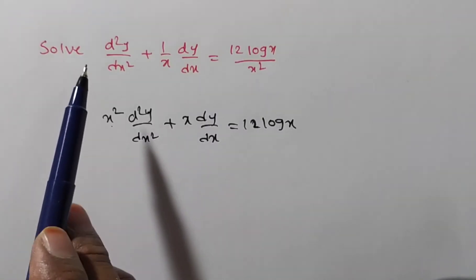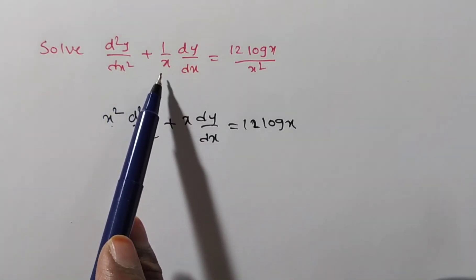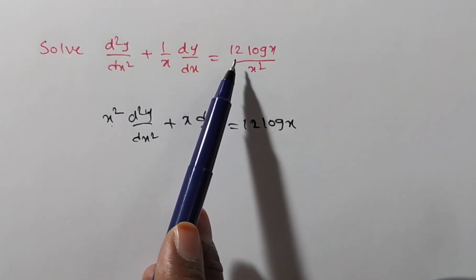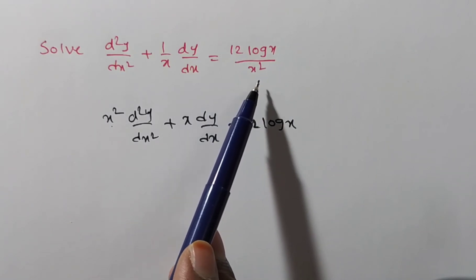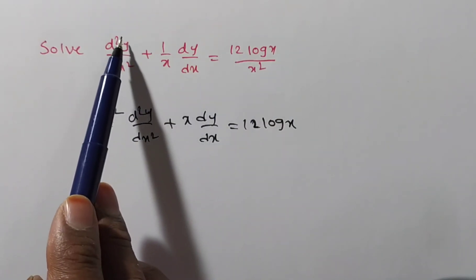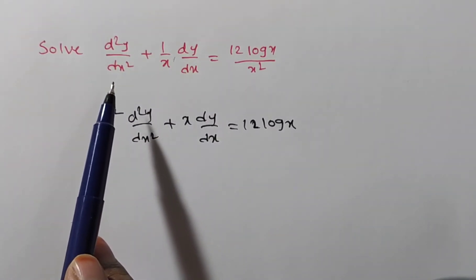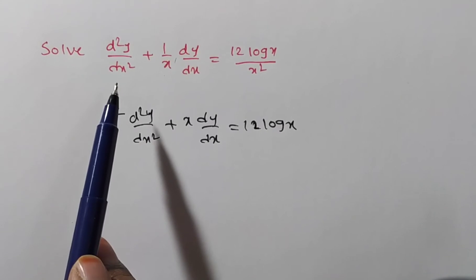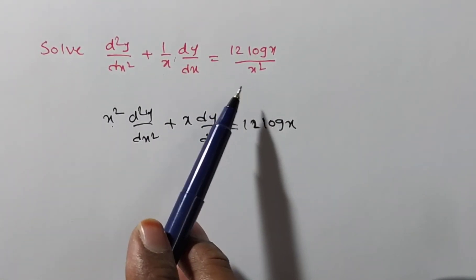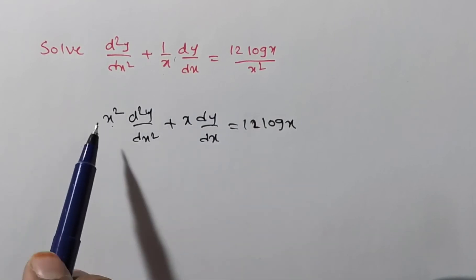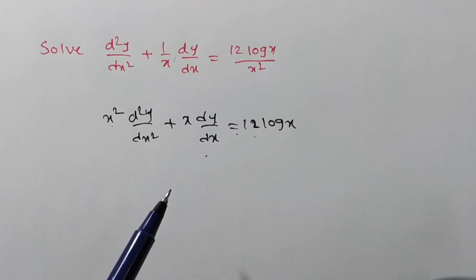Friends, now we are solving the given differential equation d²y/dx² + (1/x)(dy/dx) = 12 log x / x². We can rearrange this by multiplying with x², giving us x²(d²y/dx²) + x(dy/dx) = 12 log x.